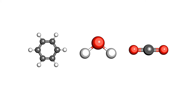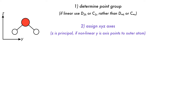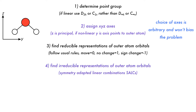This formalized procedure has the following steps. First, determine the molecule's point group. If the molecule is linear, simplify the symmetry by using D2h or C2v rather than D∞h or C∞v, which still capture the character of the orbitals. The Cartesian axes are assigned to the molecule with z being the principal axis. Any outer atoms, such as the hydrogens in water, are assumed to have their y-axis pointing towards the central atom. Then find the reducible representations for all the atomic orbitals of the outer group atoms. The next step is to reduce these to irreducible representations to provide the symmetry of the group orbitals, or the symmetry adapted linear combinations (SALCs).